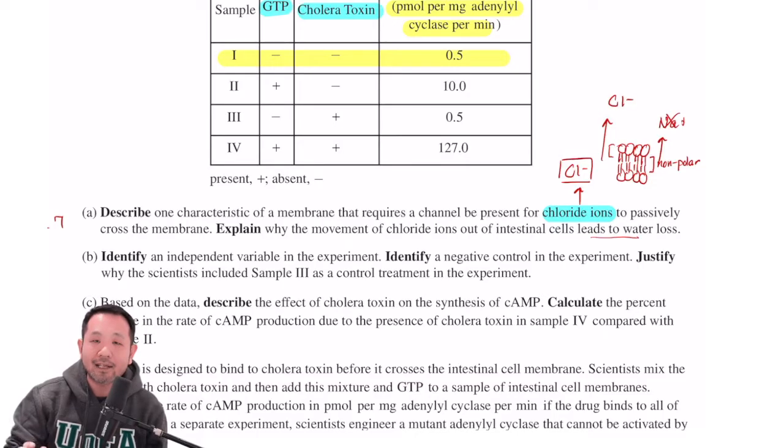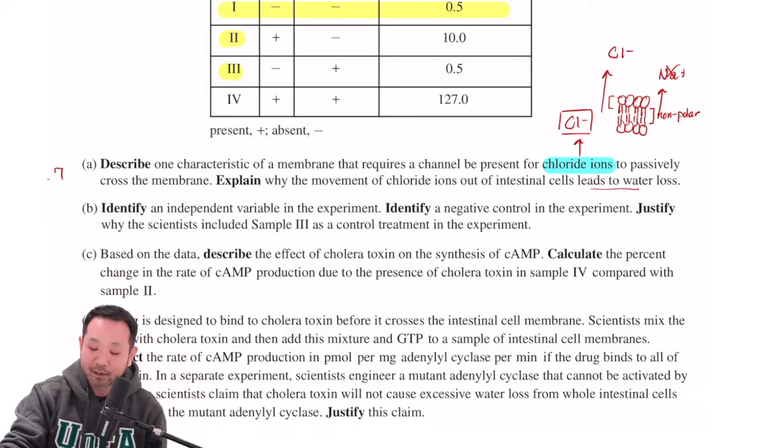What this does is that it truly isolates either GTP or cholera or simultaneously GTP and cholera as the leading cause of the dependent variable changes that we observe in the experiment. So in this case, I would go with sample 1. But even sample 2 and 3 could be negative controls with respect to the cholera toxin and the GTP, respectively.